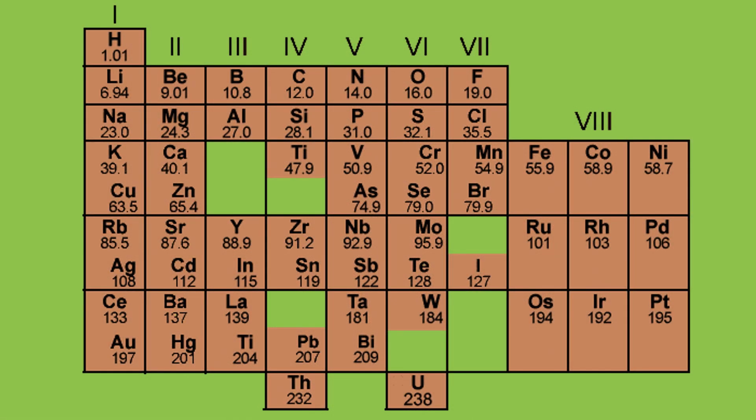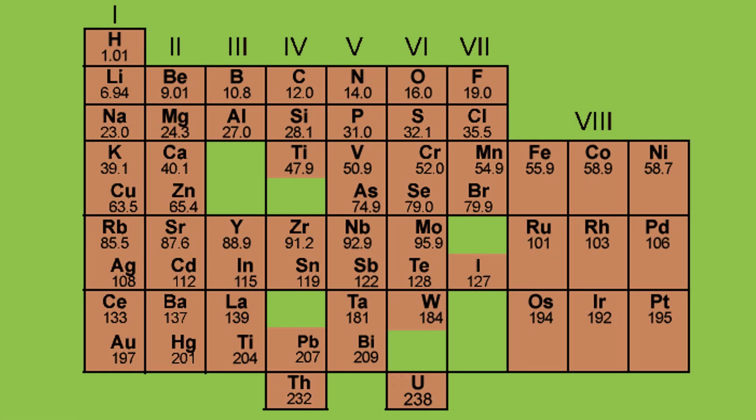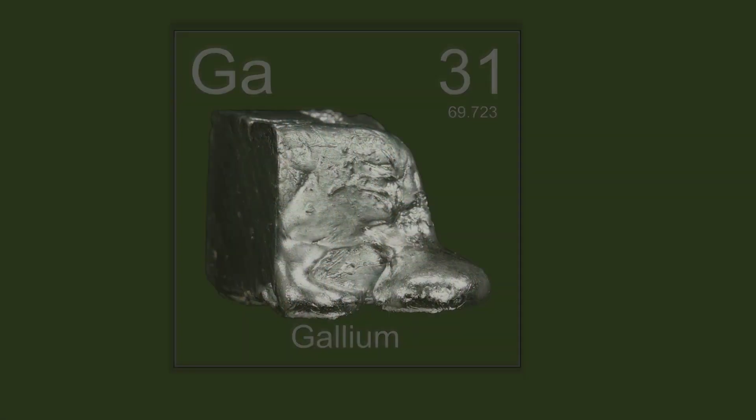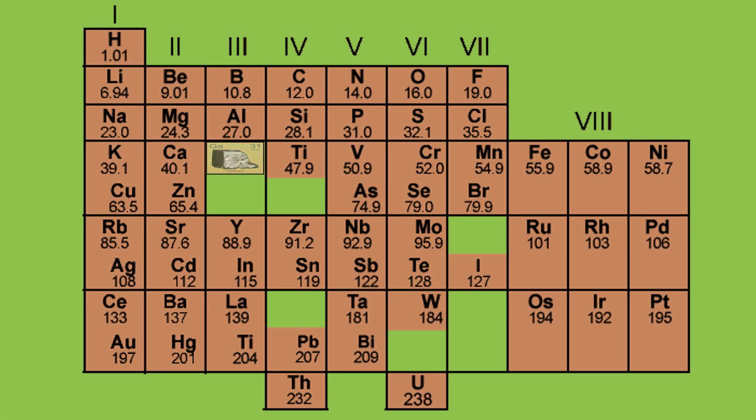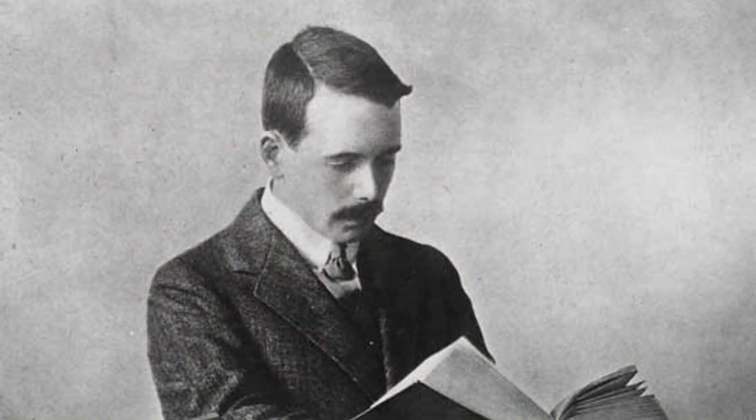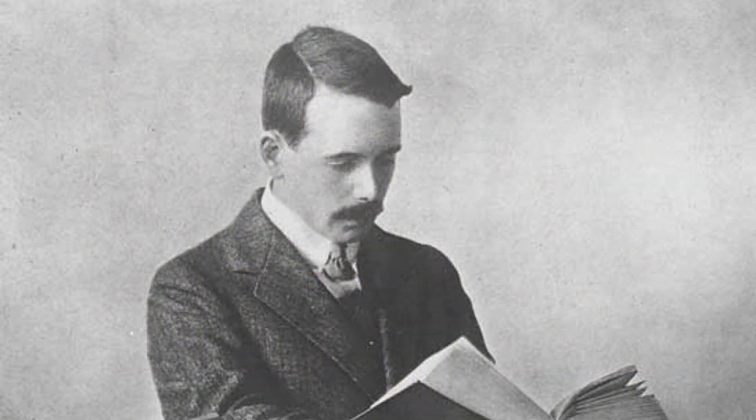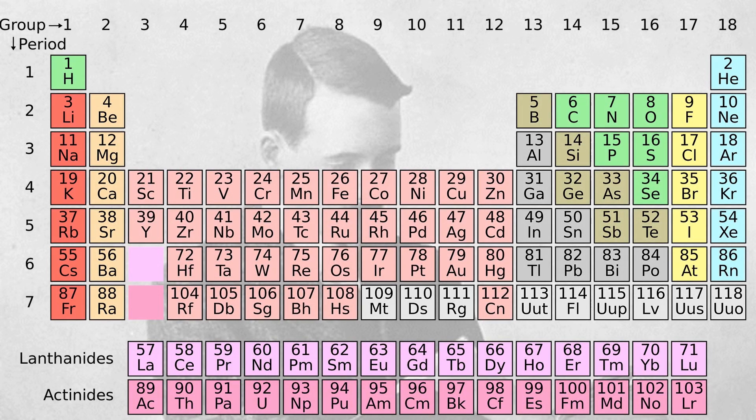In 1869, Dimitri Mendeleev organized 63 known elements in increasing order of their atomic mass. He listed elements with similar properties together and left gaps for elements which were not discovered. For example, just below aluminum he left a space for an element which was not discovered and called it eka-aluminum. Later when gallium was discovered with the same properties he predicted, it filled a vacant space.